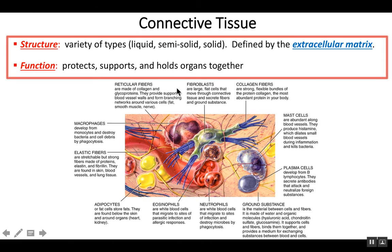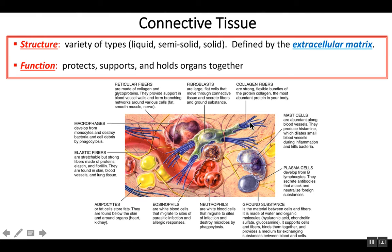This is an artistic drawing of what a connective tissue might have inside of it. Let's first try to find a cell type. We have fibroblasts here. Fibroblasts are very common in connective tissues. What this fibroblast is doing is producing fibers — hence the name fibroblast. The fibers this cell is producing are extracellular proteins found outside of the cells. It looks as if this cell is producing collagen fibers.